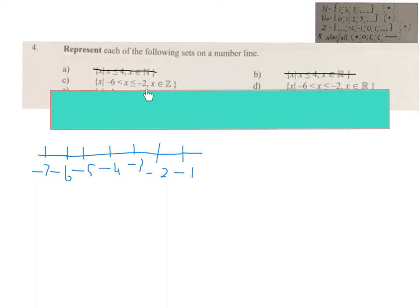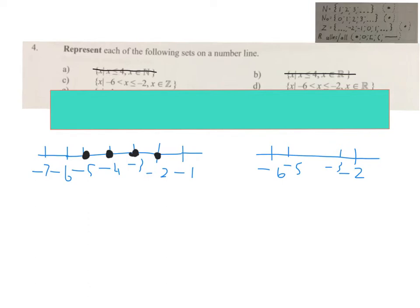Now we do the next two examples: one with integers and the same one with real numbers. I drew a number line with the relevant numbers. For integers I use dots. We start at minus 2 — there's an equal sign, so a black dot there. Then we go to minus 6 — no equal sign, so nothing special there. The first integer bigger than minus 6 is minus 5, so I start dots at minus 5 all the way to minus 2. That is the final answer.